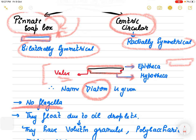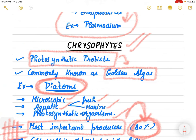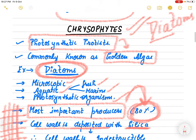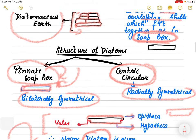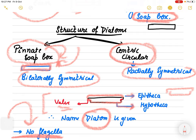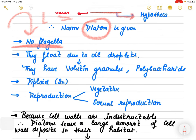Diatoms do not have any flagella. If the question comes in an exam - tell the name of a protist which does not have flagella - the answer is Chrysophyte, example diatoms. They have two layers of cell wall: epitheca and hypotheca. They float due to oil droplets and also have volutin granules and polysaccharides in their internal structure.